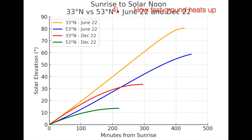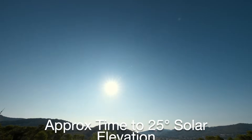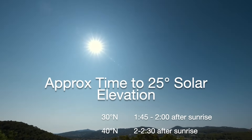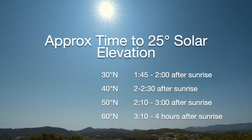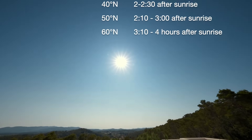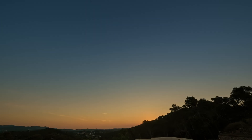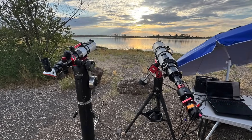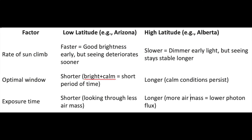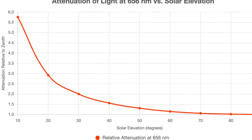If I'm observing in Phoenix — latitude 33 — in the summer, the Sun rises more vertically than for an observer in Edmonton, Alberta at latitude 53 degrees. This means the Sun rises faster per minute in Phoenix, gets brighter faster, the ground heats up faster, and it reaches a higher elevation at its apex. At low latitudes like Phoenix, the Sun rises fast and bright, but the good seeing window is short. At higher latitudes like Edmonton, the Sun climbs slower and stays dimmer longer, but calm seeing conditions last longer. Your latitude affects this significantly.